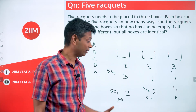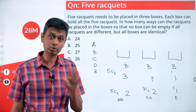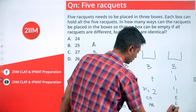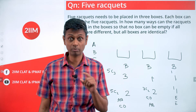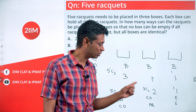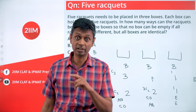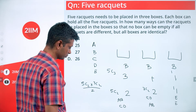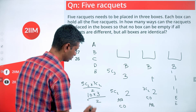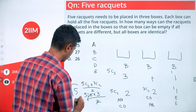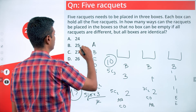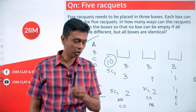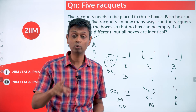The (2,2,1) case is slightly different. We must select which two go in each of the two equally-sized boxes. But selecting a, b for box one and c, d for box two is the same as selecting c, d for box one and a, b for box two — the boxes are identical, so we're double counting. Therefore it's not 5C2 × 3C2, it is 5C2 × 3C2 divided by 2.